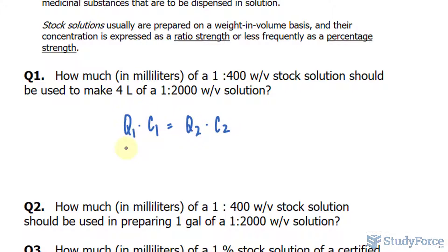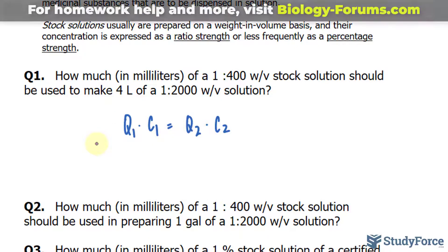Where the left side of the equation, specifically this factor, represents the quantity of the stock solution multiplied to its concentration, written as C sub 1, equals the quantity of the solution we are creating times its concentration. So think of the left side as the before and the right side as the after.